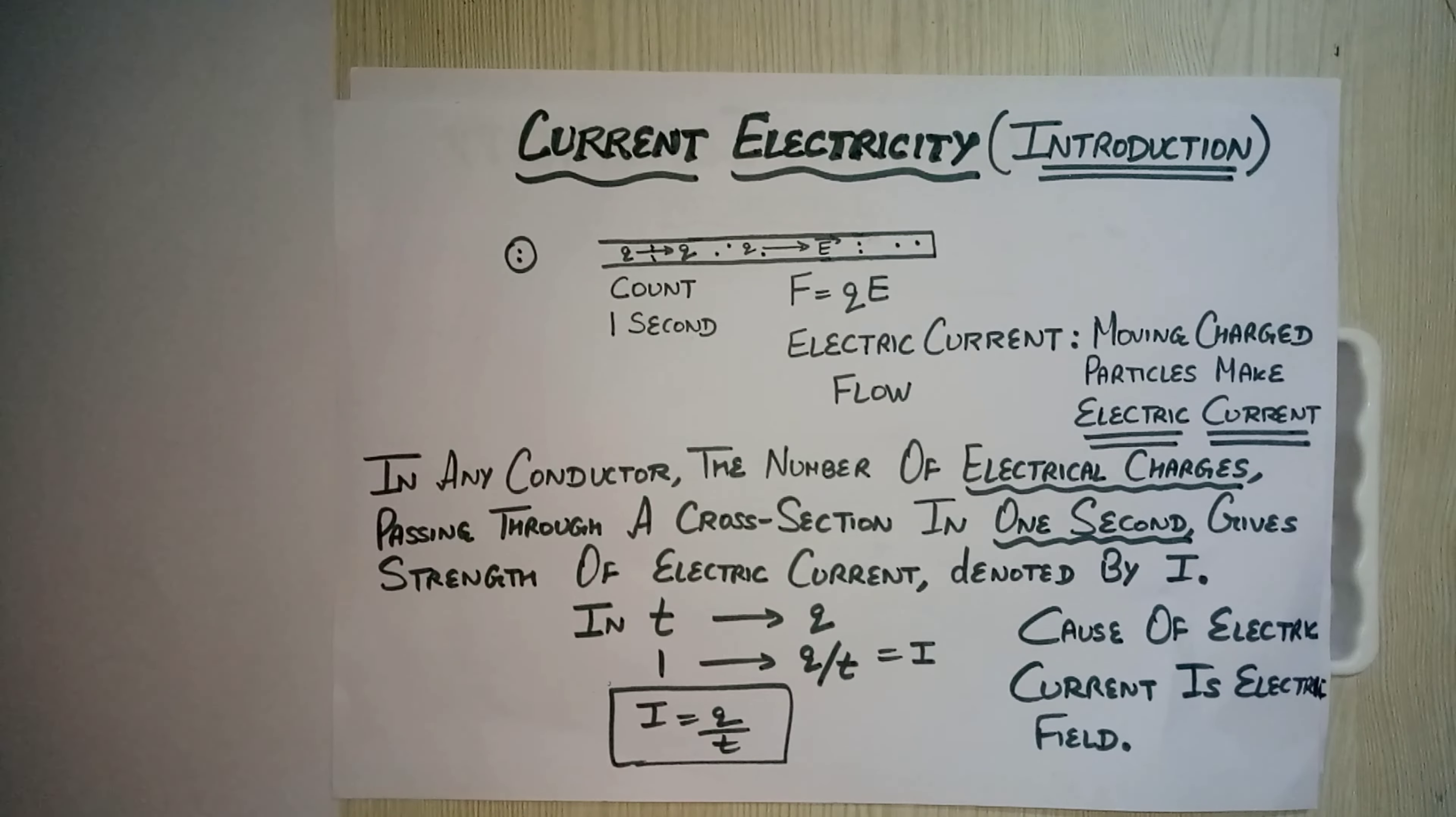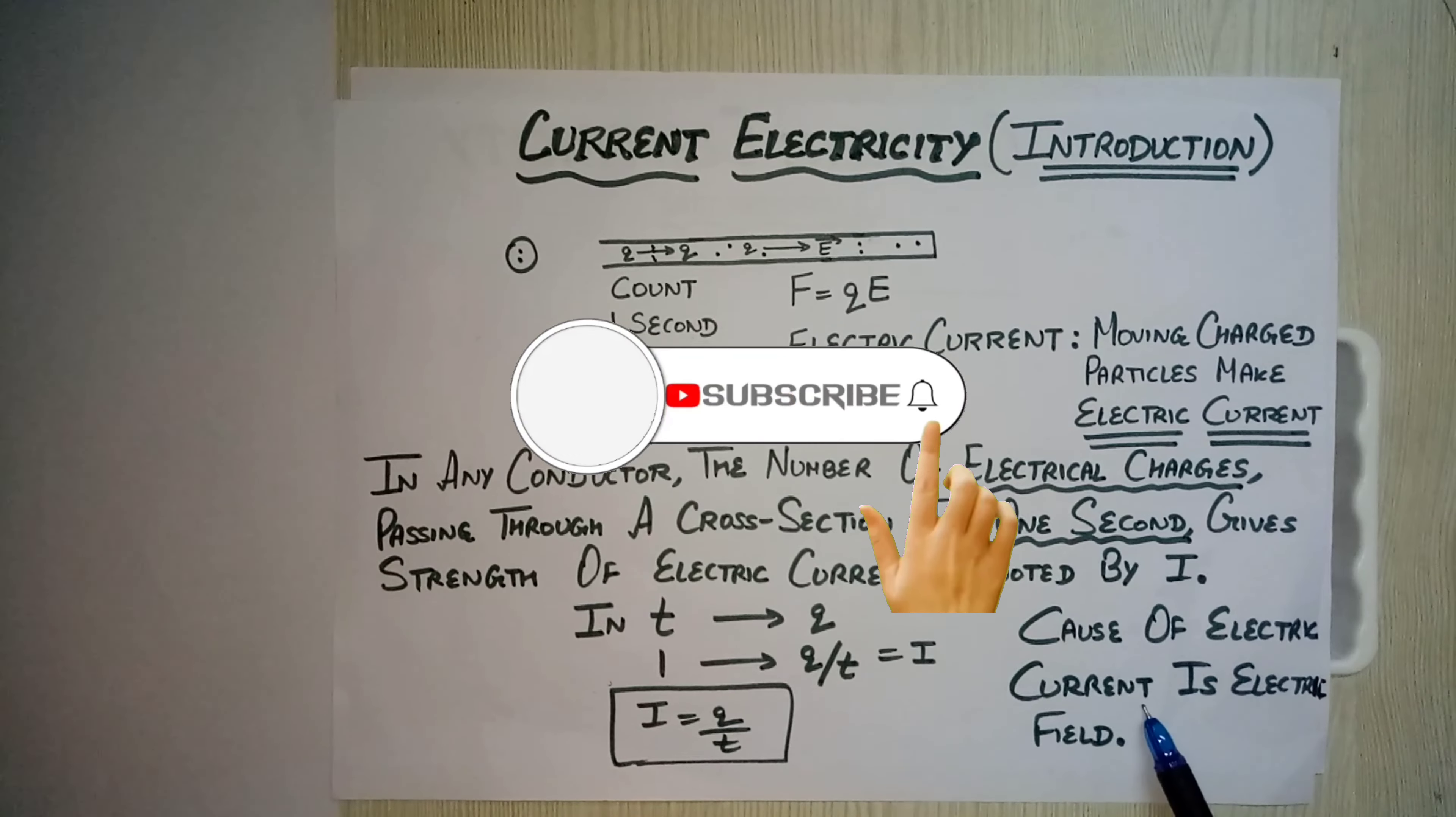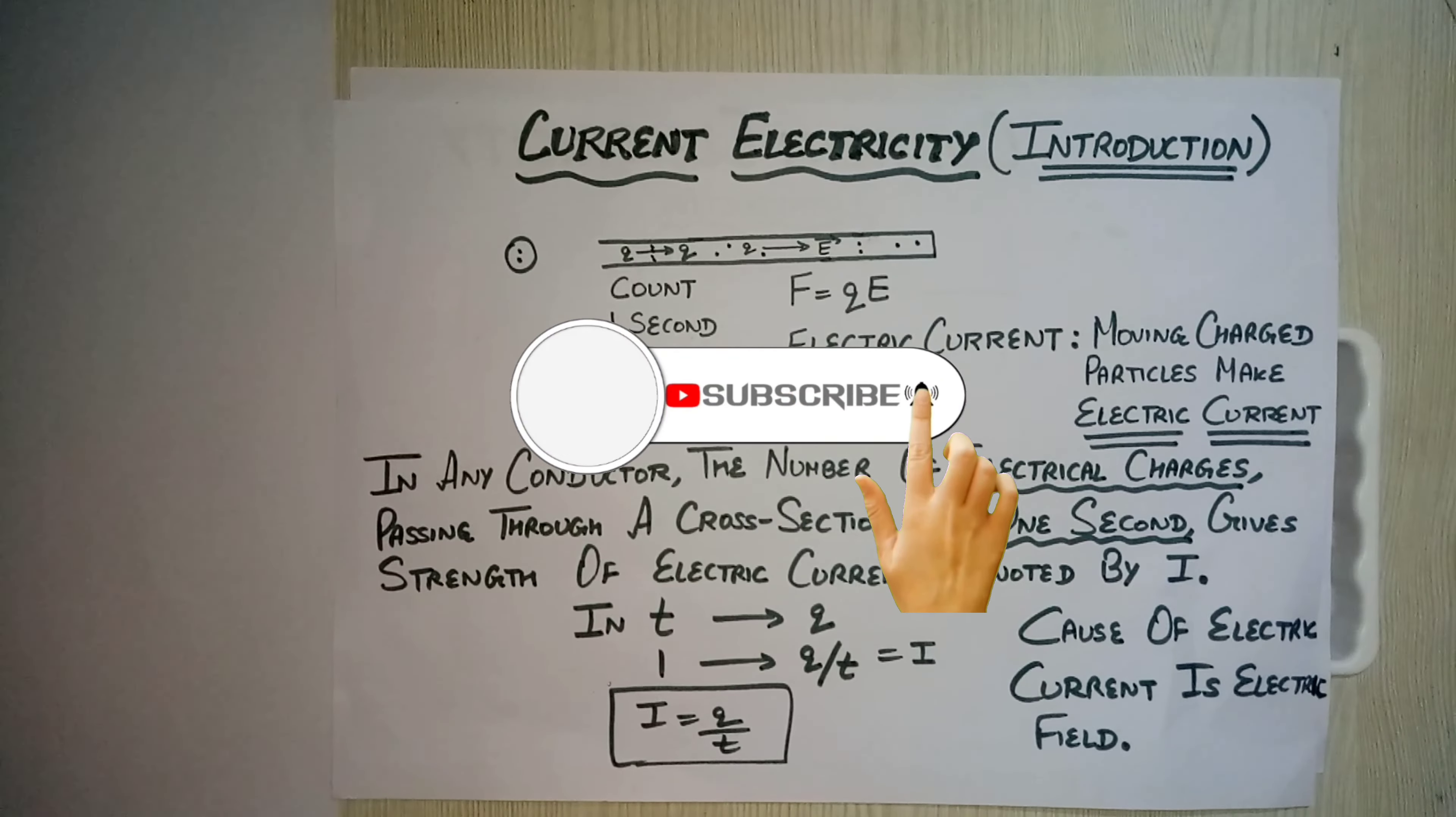Electric current is the flow of charges. Why the charges should flow? There has to be an electric field which will promote or which will be the cause of electric current.